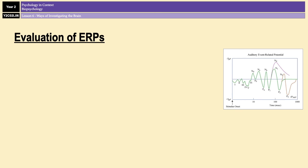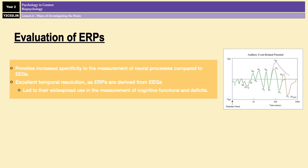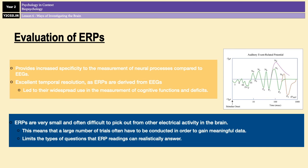ERPs bring much more specificity to the measurement of neural processes than could ever be achieved using raw EEG data. They also have excellent temporal resolution, meaning data is presented in real time with no delay — and those strengths have led to the widespread use of ERPs in the measurement of cognitive functions and cognitive deficits. The downside is that ERPs are very small and very difficult to pick out from all the other electrical activity in the brain, meaning a large number of trials often have to be conducted to gain meaningful data, which takes time and costs money. It also limits the type of questions that ERP readings can realistically answer.